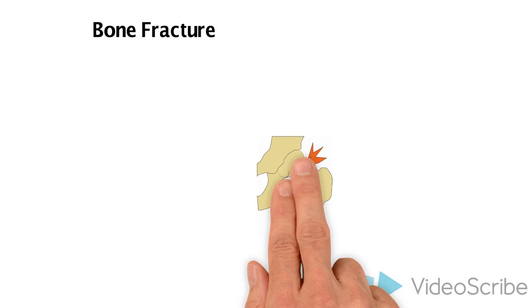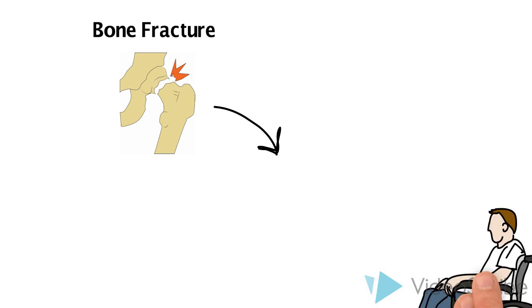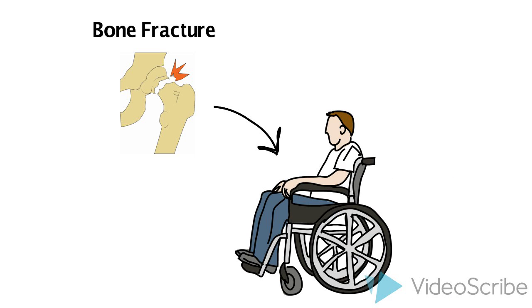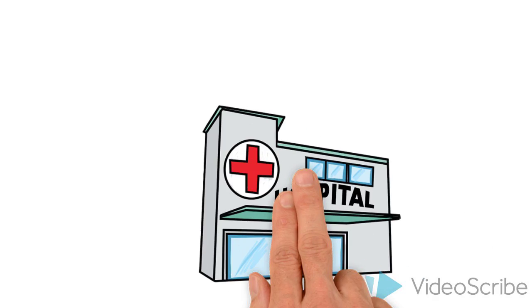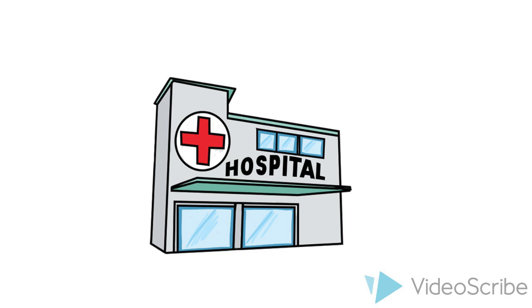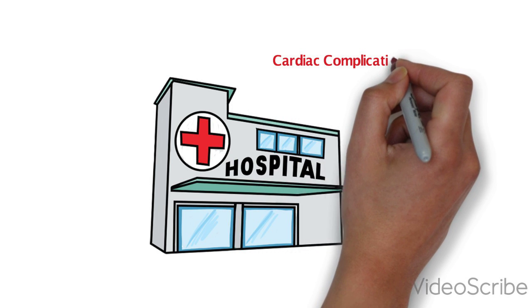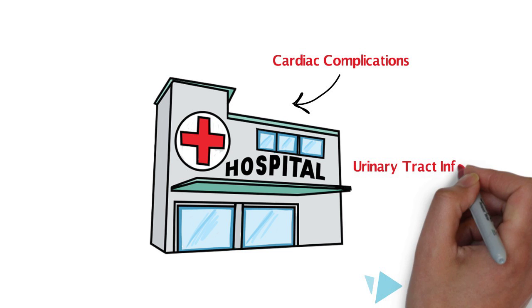In older populations, fractures in the hip or the vertebrae make it painful to move, and this leads to immobility. As a result, this can lead to hospitalization and secondary problems such as cardiac complications, urinary tract infections, or pneumonia.